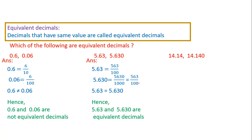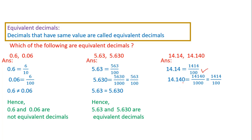Let's take one more problem: 14.14 and 14.140. In the first step, convert the given decimals into fractions. 14.14 is equal to 1414 by 100. After converting the second decimal 14.140 into a fraction, we get 14140 by 1000. Canceling 10 from the numerator and 10 from the denominator, we get 1414 by 100.